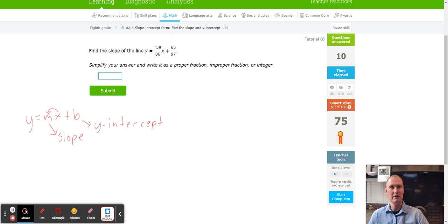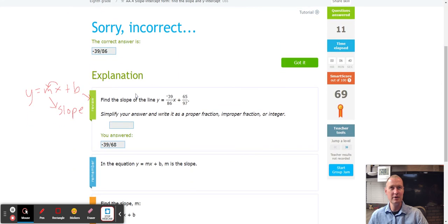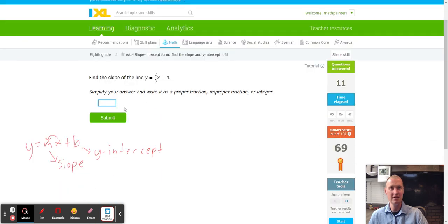Oh, they're trying to be scary, they're doing negative 39 over 86 and 65 over 97, but it's still the same thing. Because we're looking for the slope, we're going to want that negative 39 over 86. The key here is type it in correctly, that's why they're trying to make it harder. And sure enough, did I type it in incorrectly? Yes I did, because I put 68, so now it backs me up to 69.